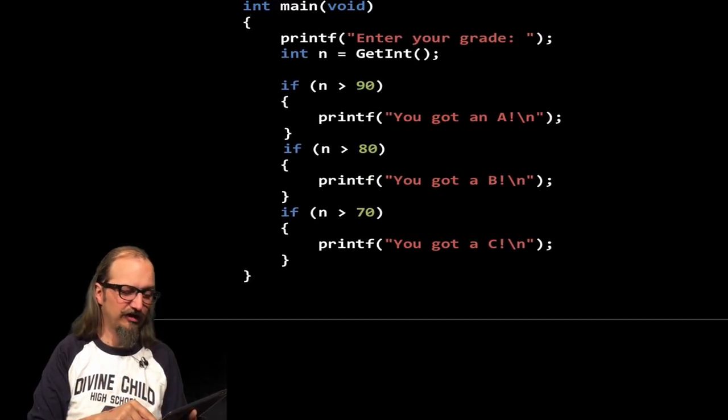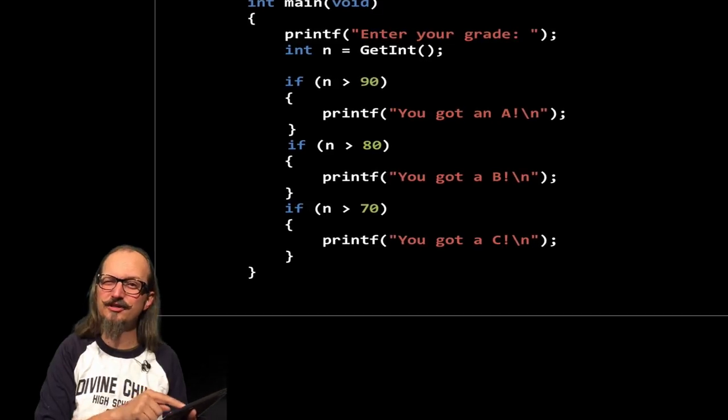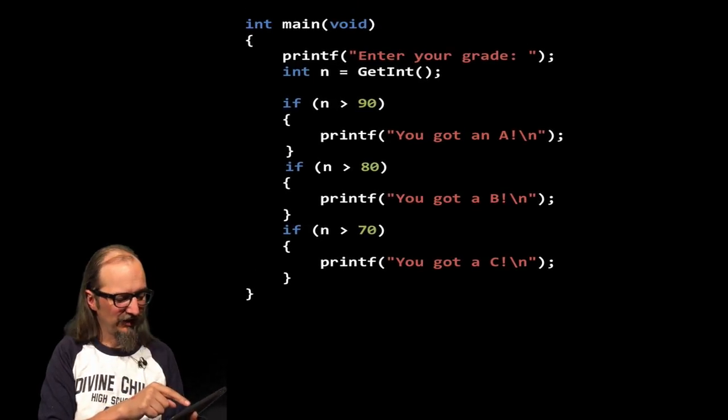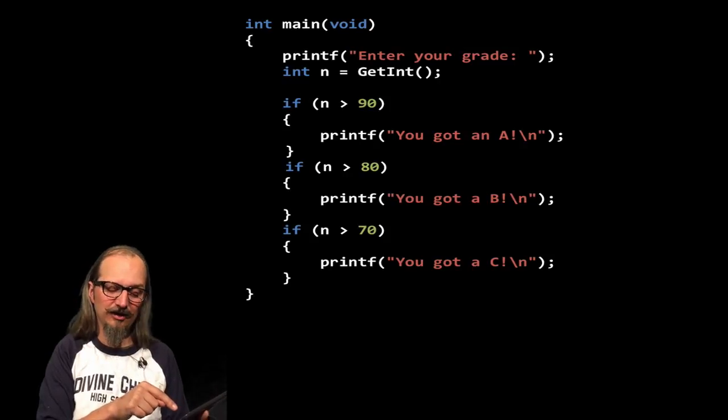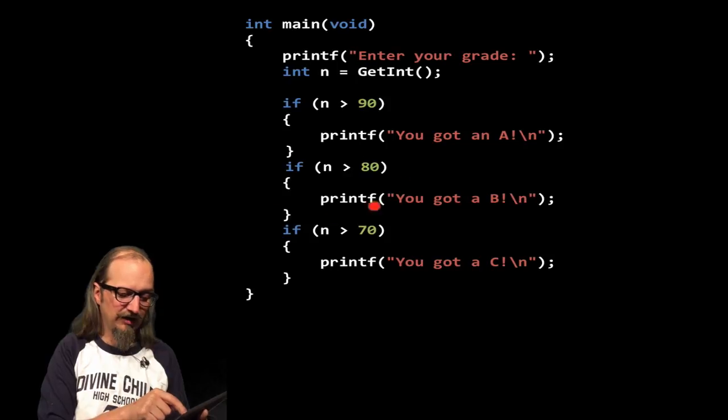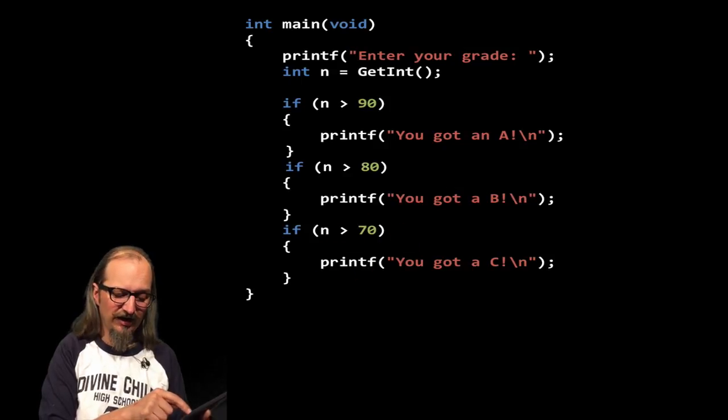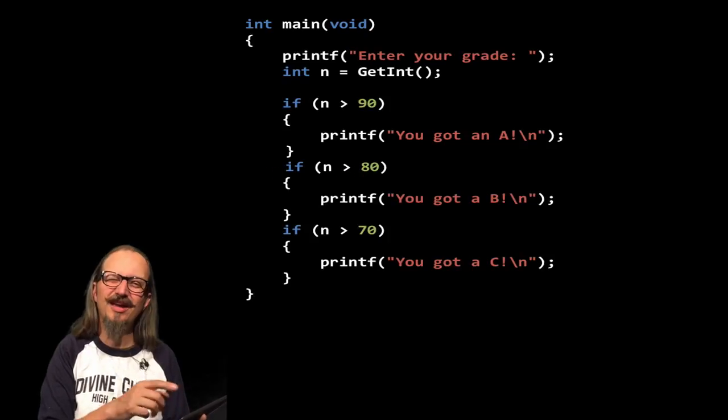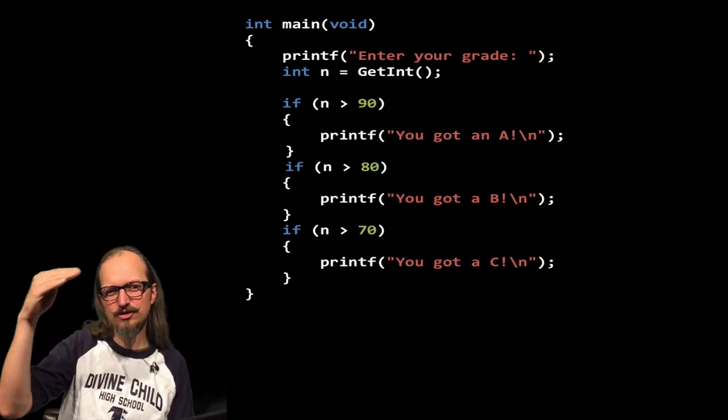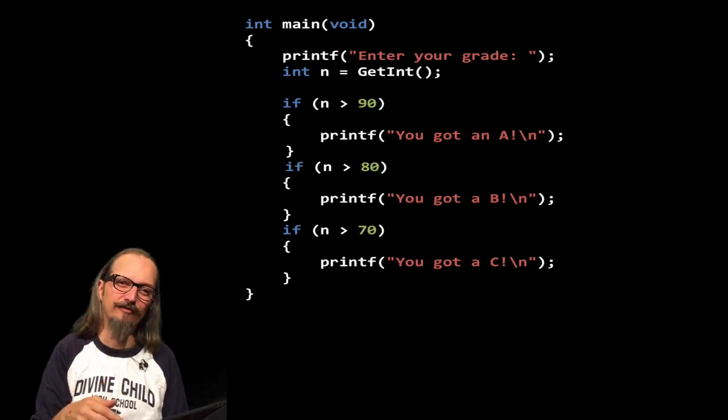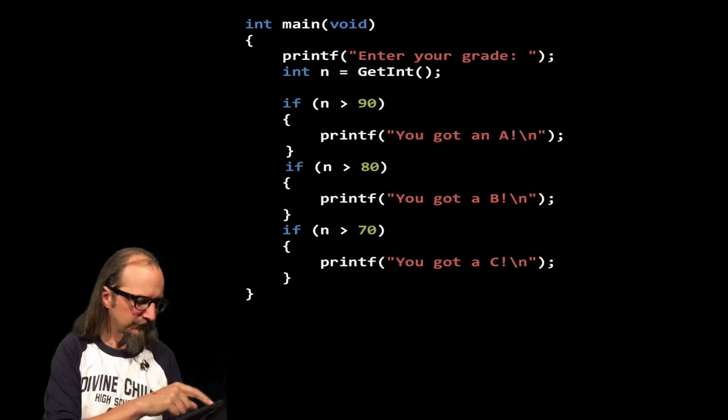So in this case, you would have been far better off to use a series of else ifs. Because if it's greater than 90, you got an A. Else if N is greater than 80, you got a B. And then else if it's greater than 70, you got a C. So it would only get to here if this was an else if in here, if this was not true. So else ifs, very important. Sometimes you can get away with just using a series of ifs. And sometimes you're going to need to have this in there.